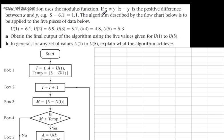We're told the algorithm described by the flowchart is to be applied to five pieces of data: U1 is 6.1, U2 is 6.9, U3 is 5.7, U4 is 4.8, and U5 is 5.3. In part A, we're asked to obtain the final output of the algorithm using the five values given for U1 to U5. In part B, for any set of values U1 to U5, explain what the algorithm achieves.